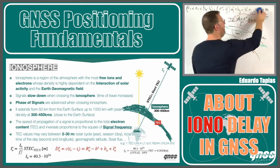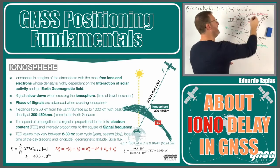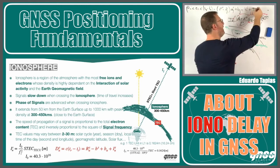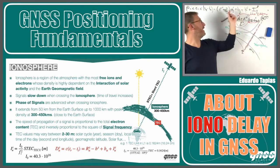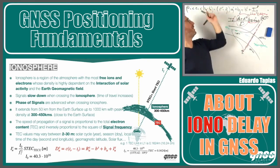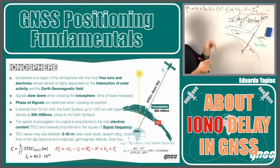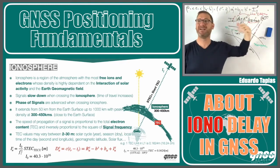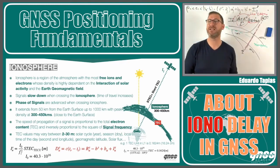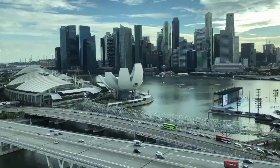I will add here in my equation the delay coming from the ionosphere, which depends on the satellite and the receiver. In my equation, when the receiver is estimating the pseudo distance, this ionospheric delay also has to be taken into account.